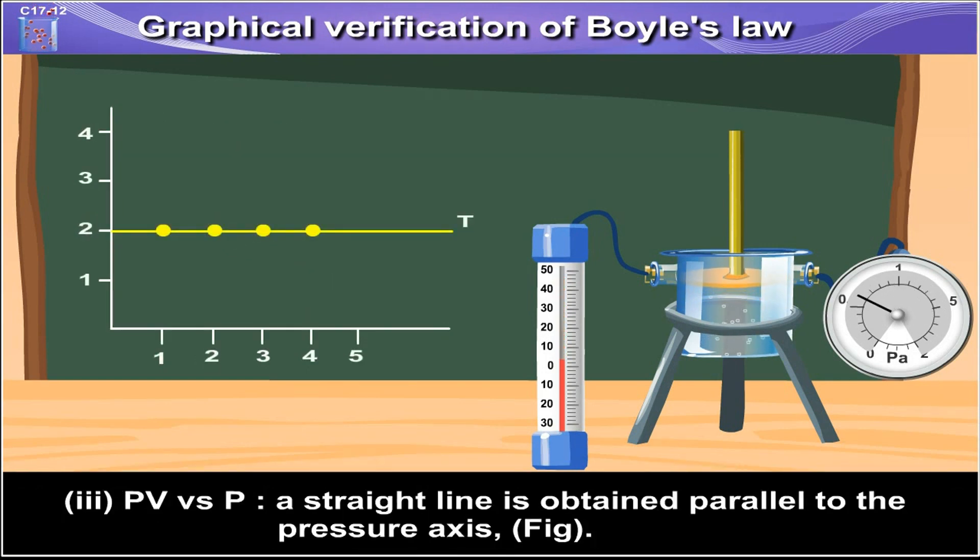Third, PV vs. P: a straight line is obtained, parallel to the pressure axis, as seen in the figure.